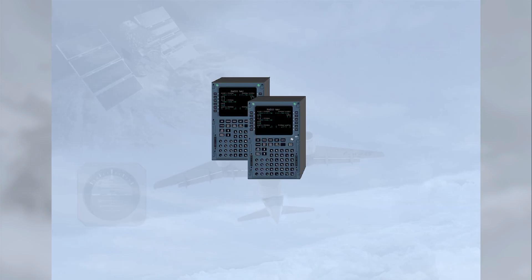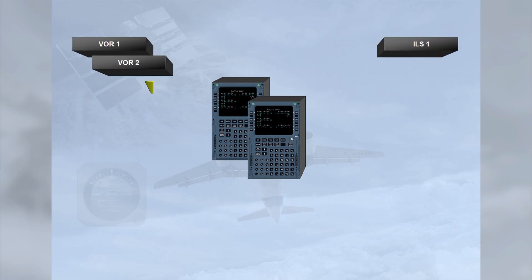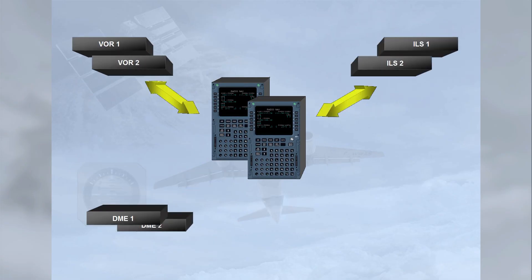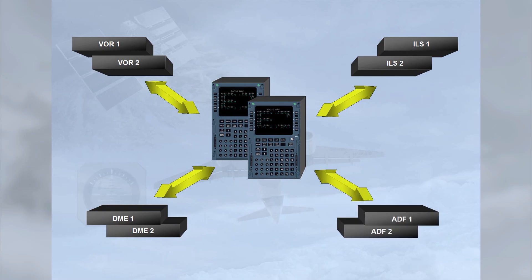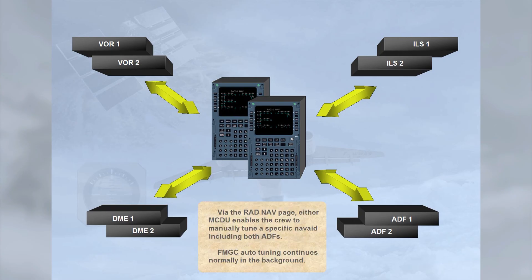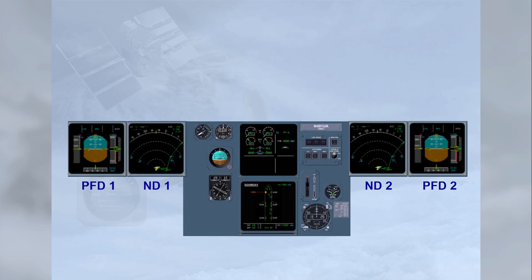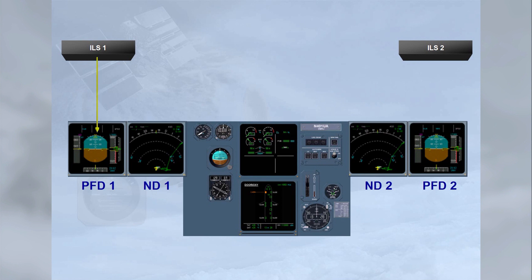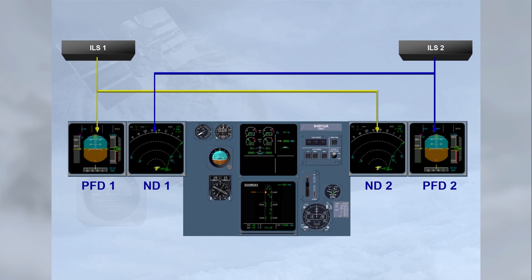Via the radio navigation page, either MCDU enables the crew to manually tune a specific nav-aid, including both ADFs. FMGC auto-tuning continues normally in the background. Note that when an ILS approach is selected, ILS-1 is displayed on PFD-1 and ND-2, and ILS-2 is displayed on PFD-2 and ND-1.